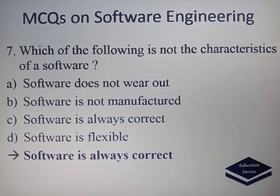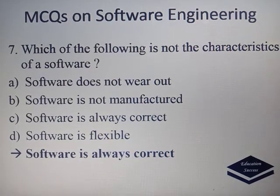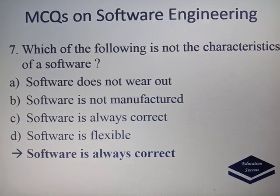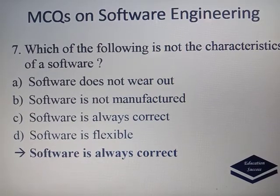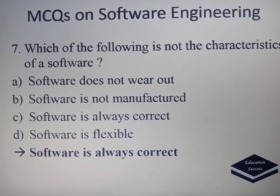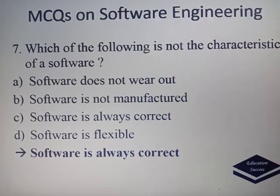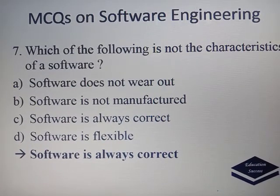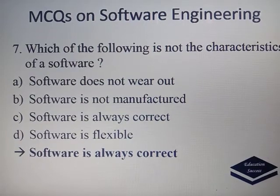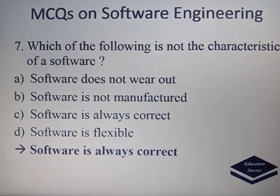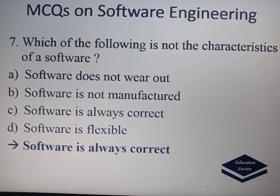Which of the following is not a characteristic of Software? Options are: Software does not wear out, Software is not manufactured, Software is always correct, and Software is flexible. Options A, B, and D are characteristics of Software. So the correct answer is 'Software is always correct' — this is not a characteristic of Software.